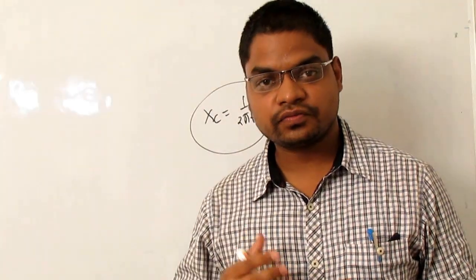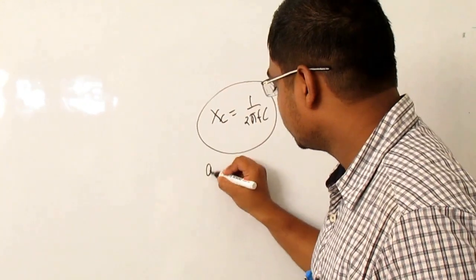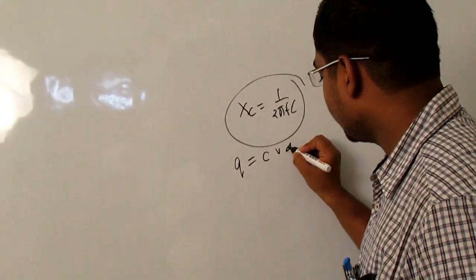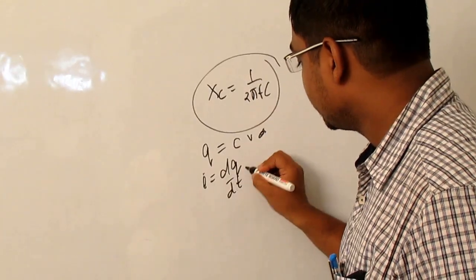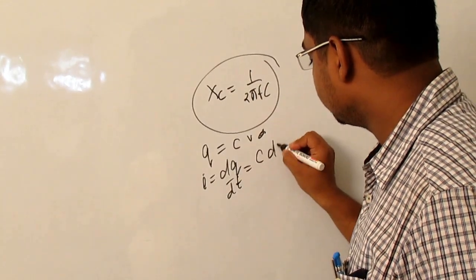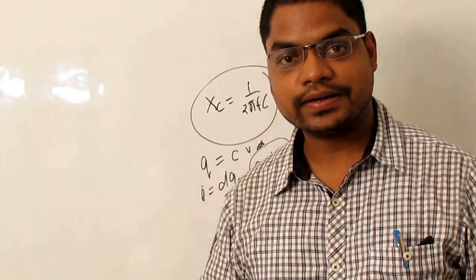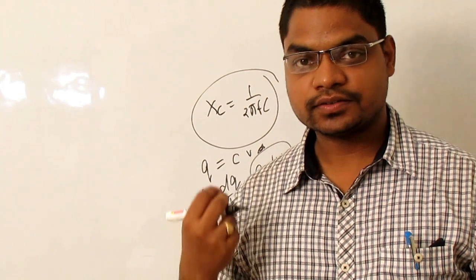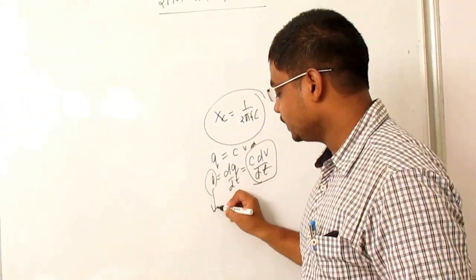And sir, we can understand this phenomenon by using one more equation. We know q is equal to cv and i is equal to dq by dt, which is c dv by dt. So, for our DC source, voltage is constant. So, dv by dt is 0. That is why current will be 0.